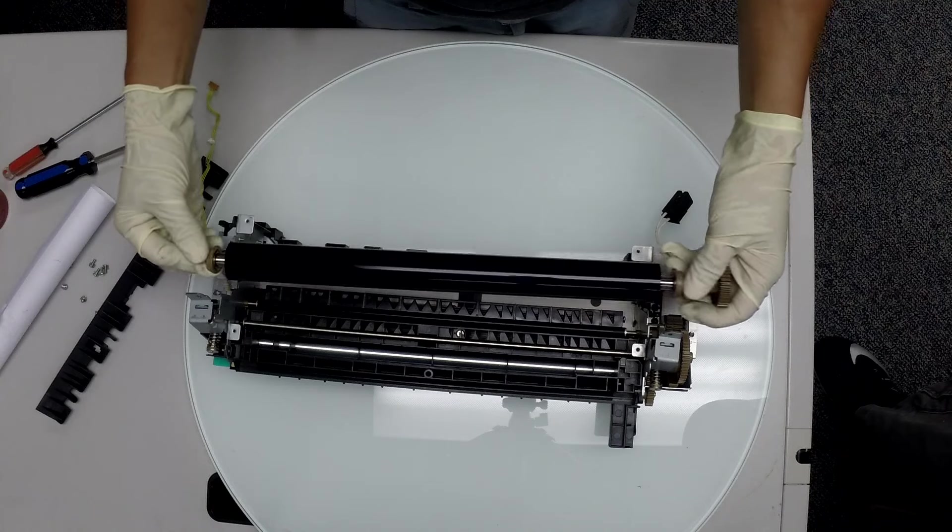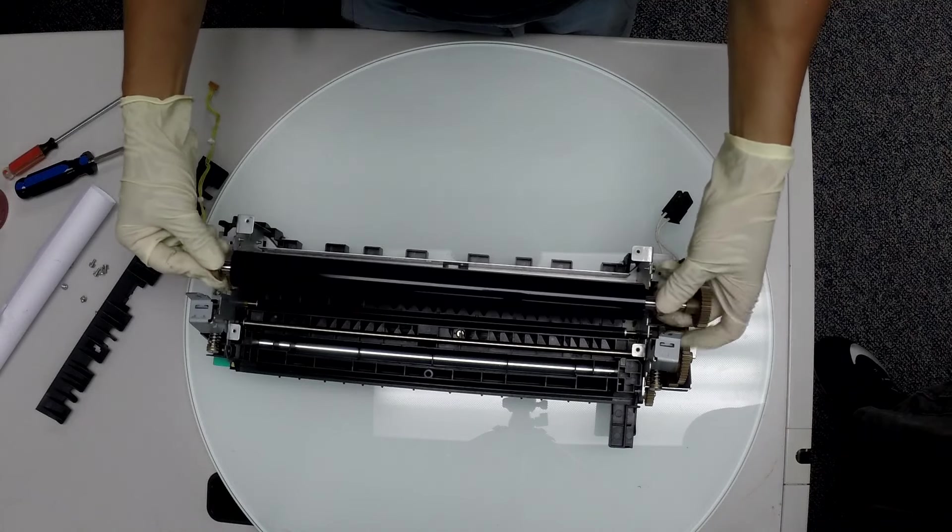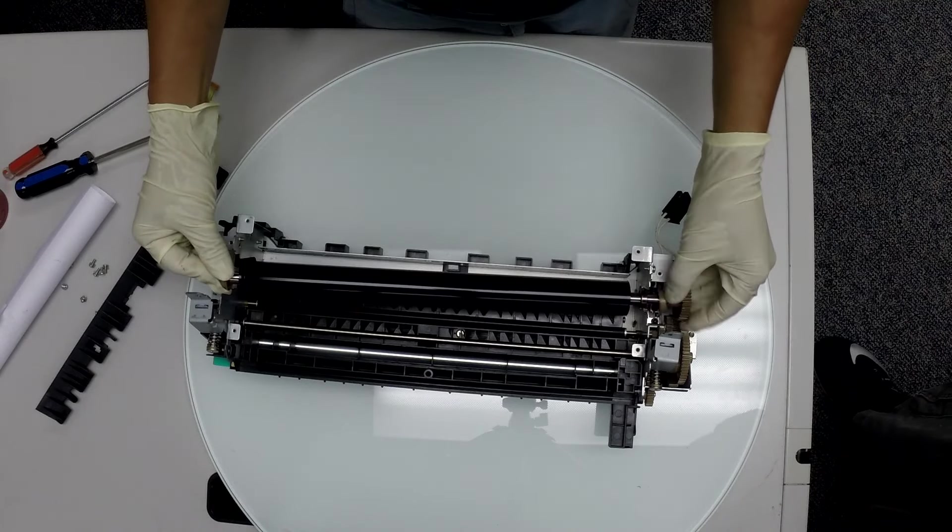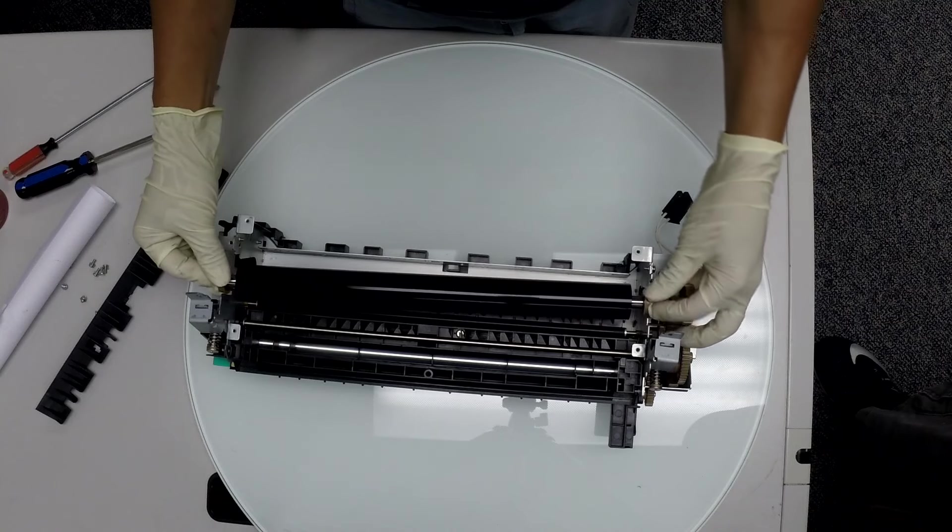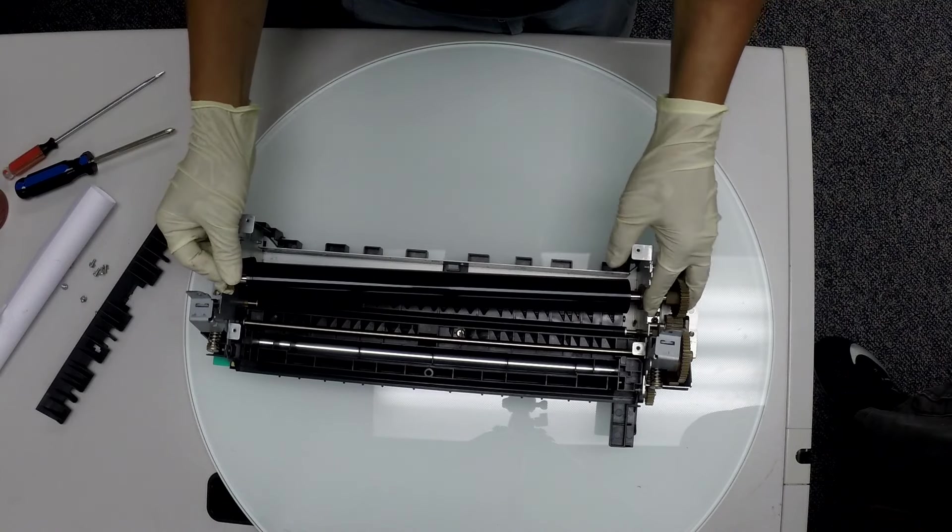Once the bearings and the gear are in place, we're going to line up the pressure roller in position with the metal frame. Once everything is installed and locked in, don't forget to put the C-clip back on the gear.